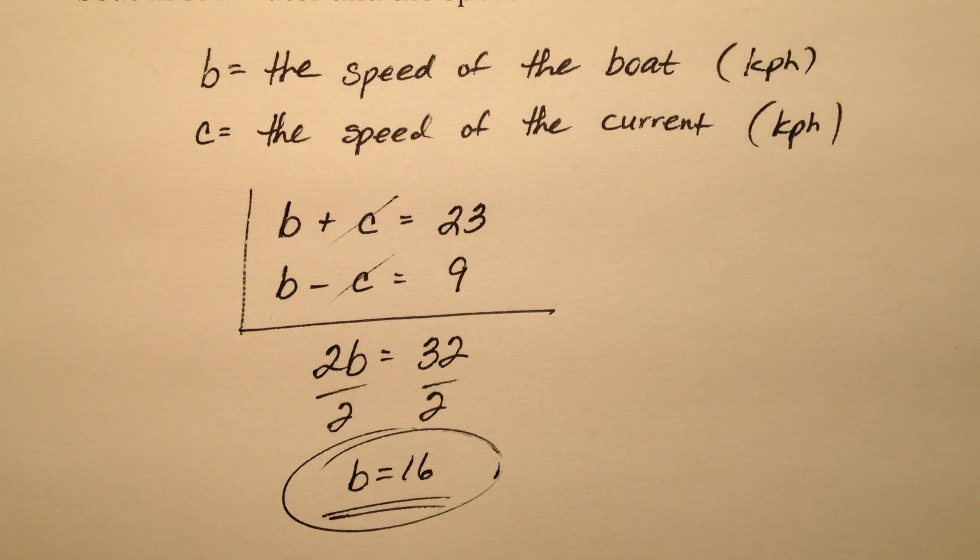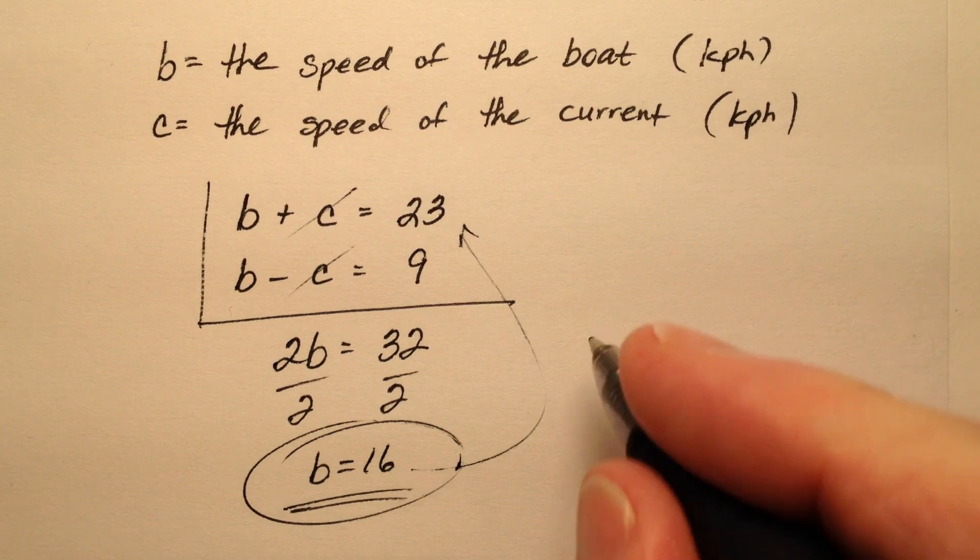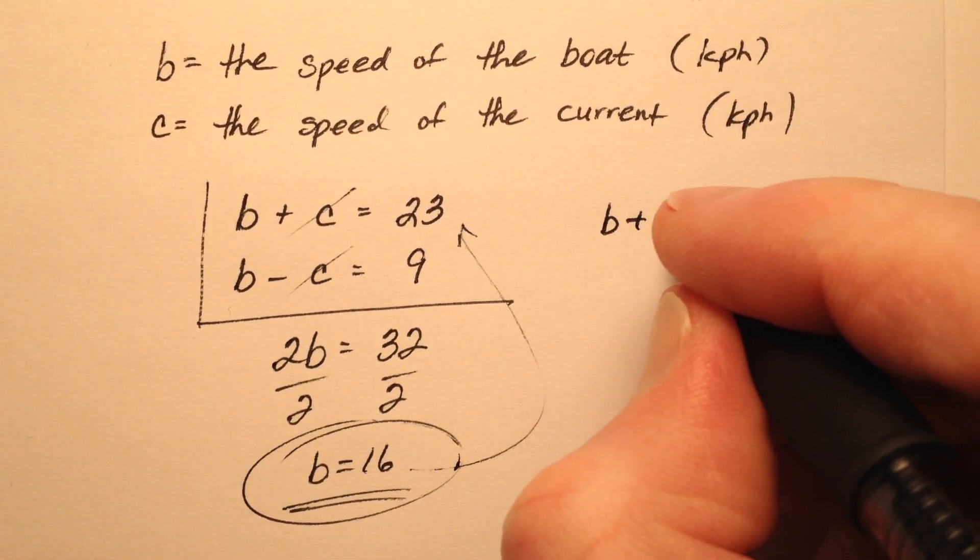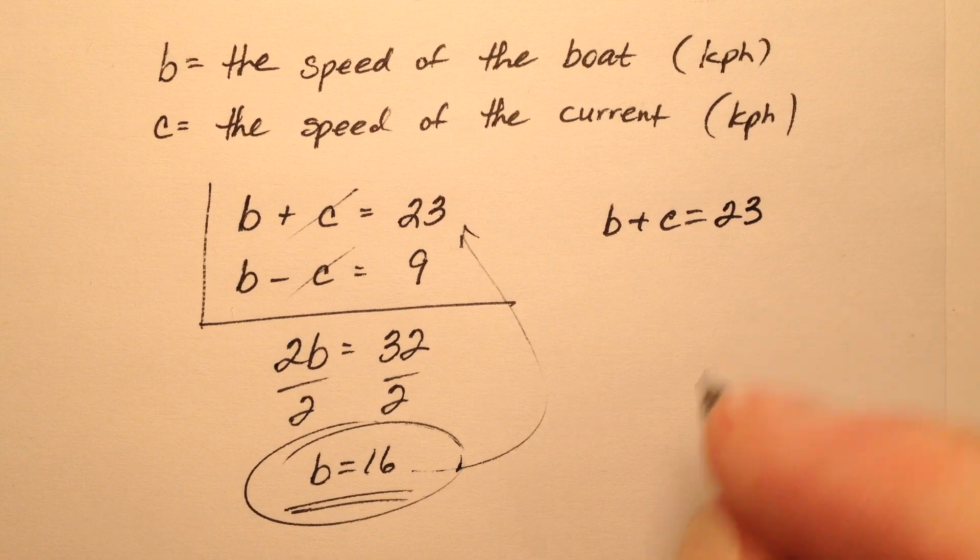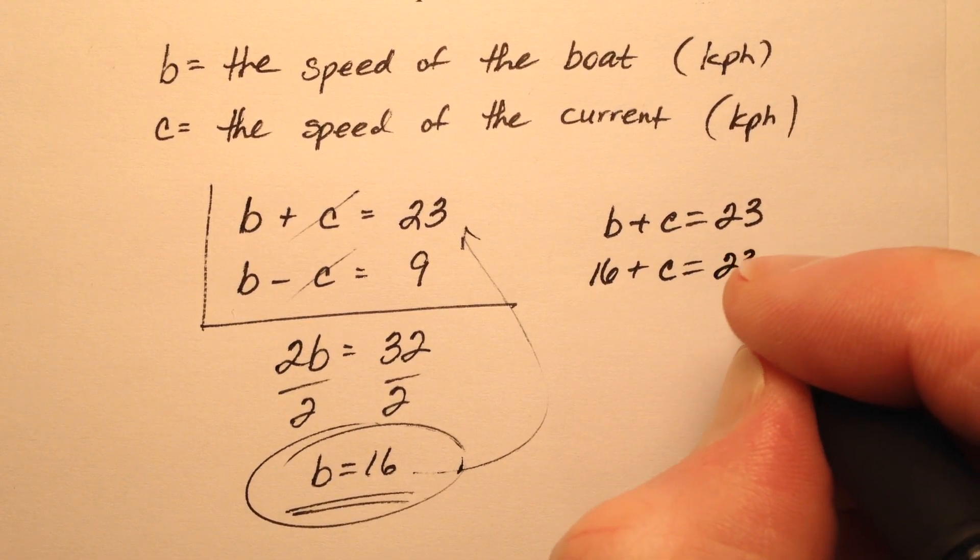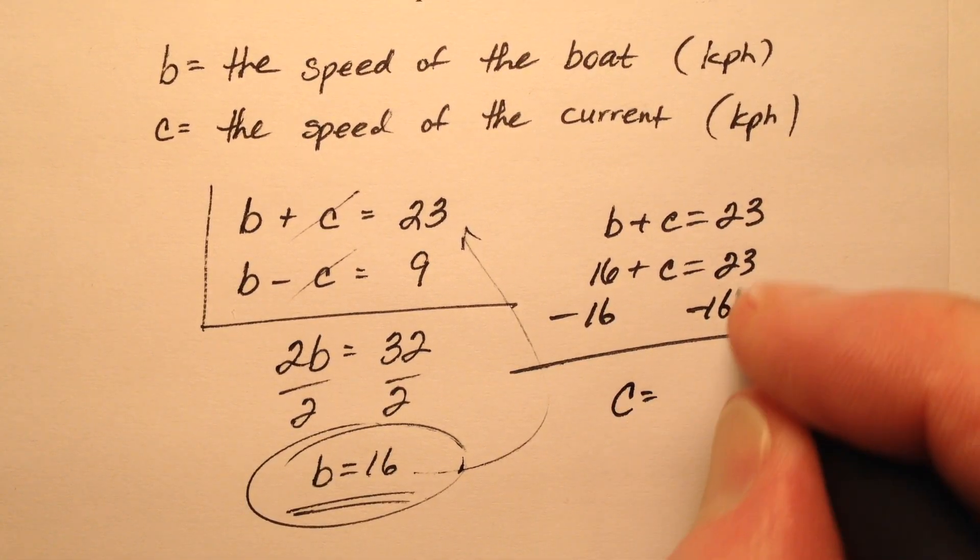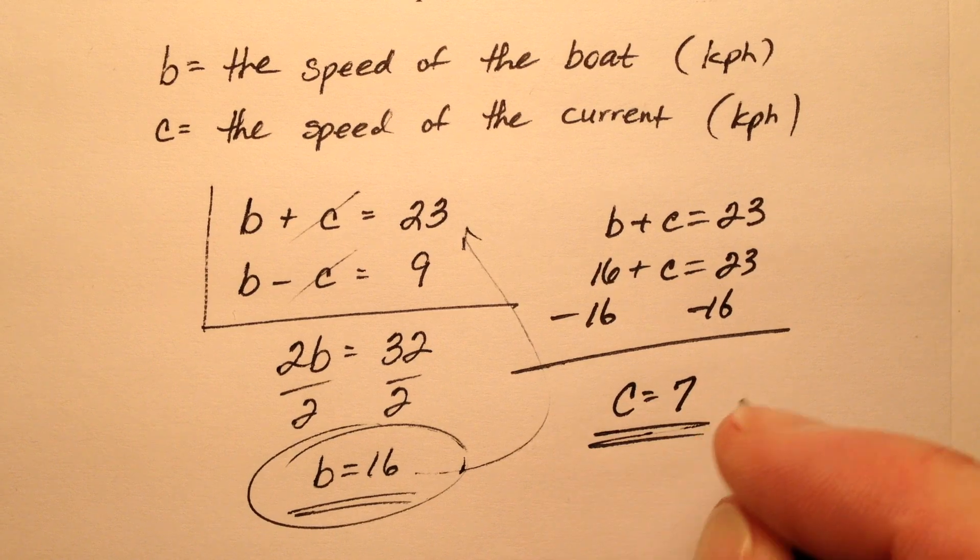Once I have the value of one variable, let's plug it back in. So b + c = 23. If I plug 16 in for b and subtract 16 from both sides, c equals 7.